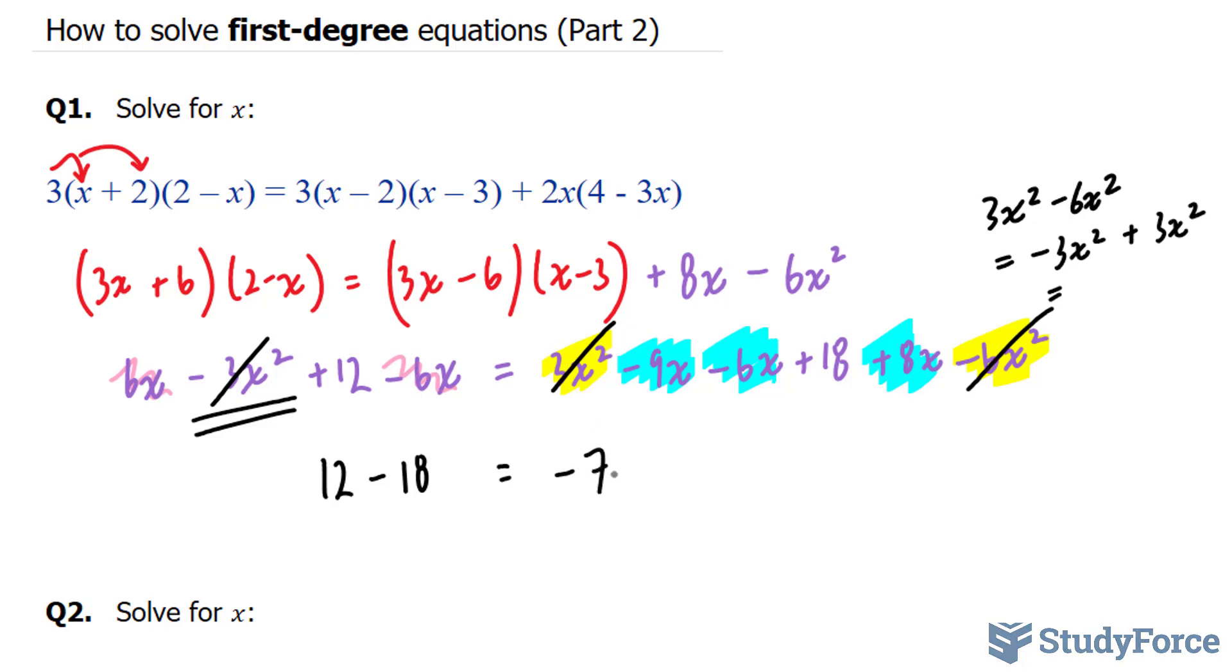Then we have 12 minus 18. On the right side, we end up with negative 7x. This simplifies to negative 6 is equal to minus 7x. Therefore, x is equal to negative 6 over negative 7, which gives us 6 over 7. And that's our solution.